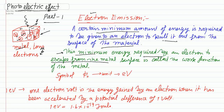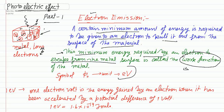That minimum energy required by an electron to escape from the metal surface is defined by the work function. The work function is the minimum energy required to escape an electron from the metal surface. It is a small energy needed to escape the electron from the metal surfaces.